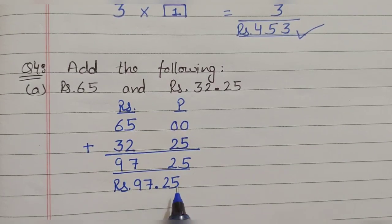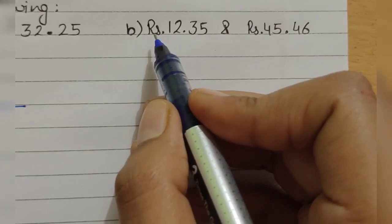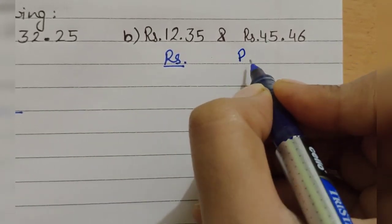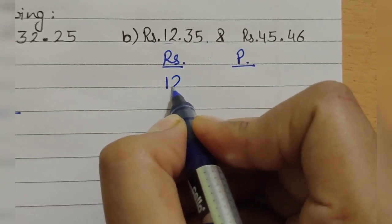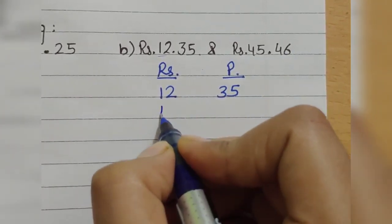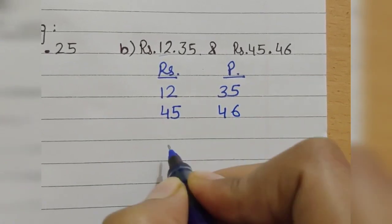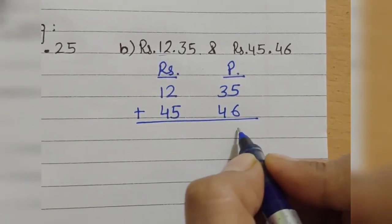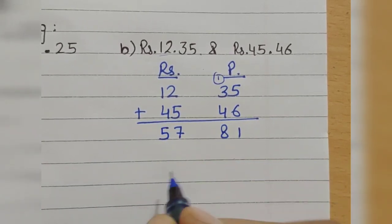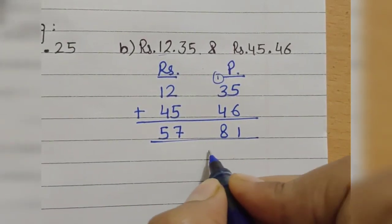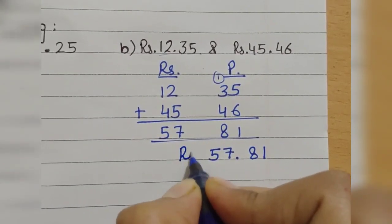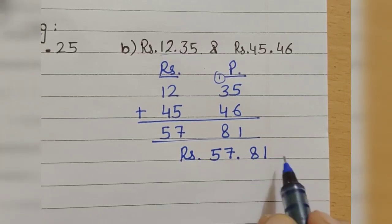Let's solve one more problem. Again we have to add money, so write the rupees column and paise column. First amount is 12 rupees and 35 paise, next amount is 45 rupees and 46 paise — so 45 and 46 here. Add it: 5 plus 6 is 11, write 1 carry 1; then 3 plus 4 plus 1 is 8; then 2 plus 5 is 7; and 1 plus 4 is 5. Write the answer as 57.81 — that is 57 rupees and 81 paise.